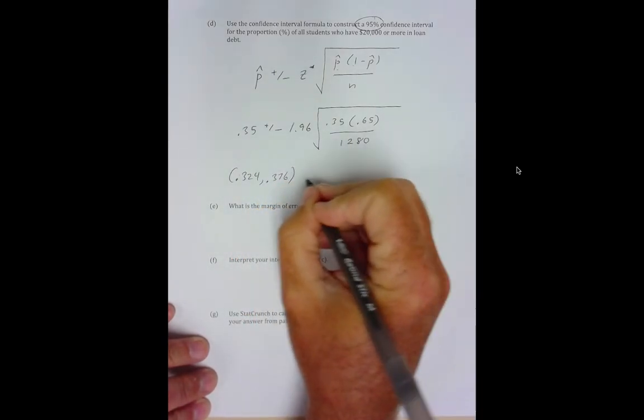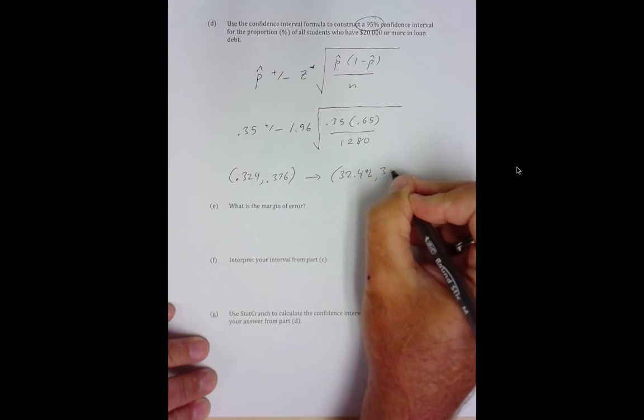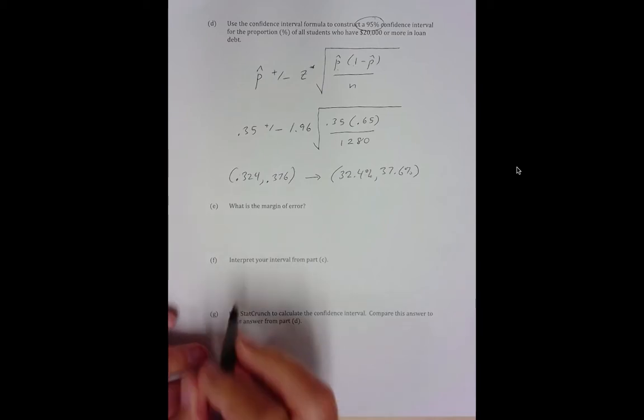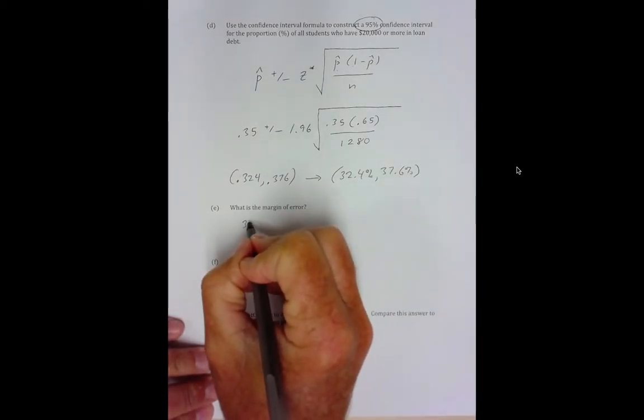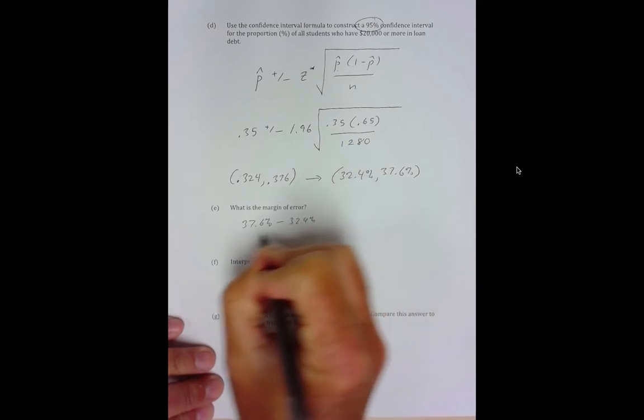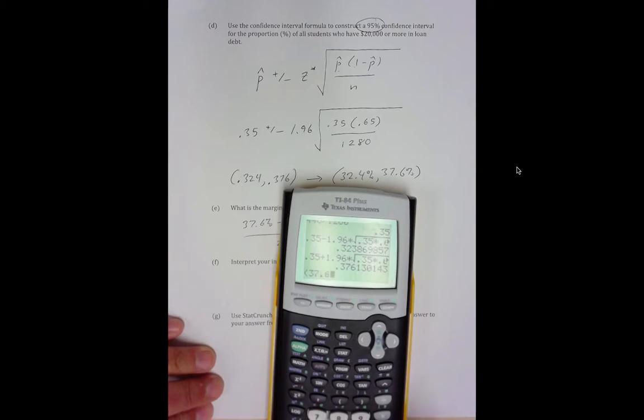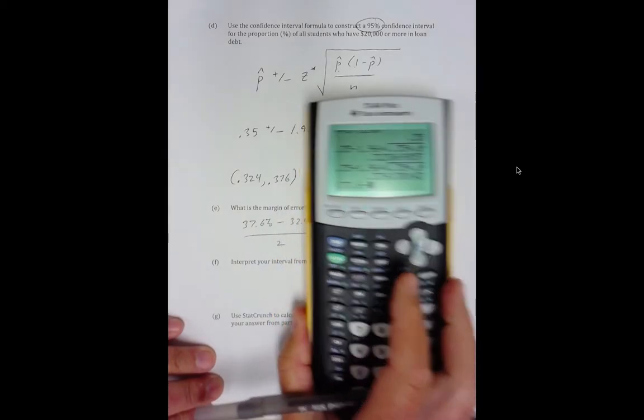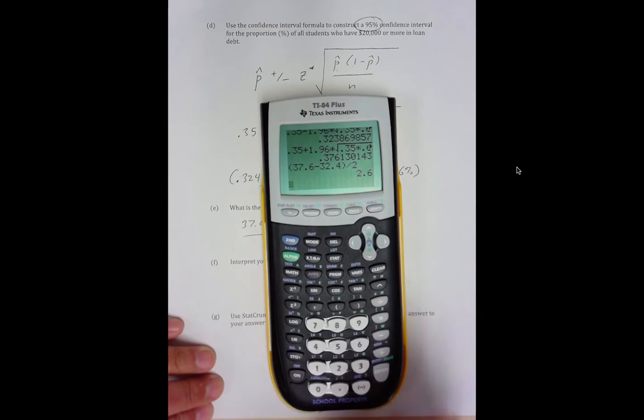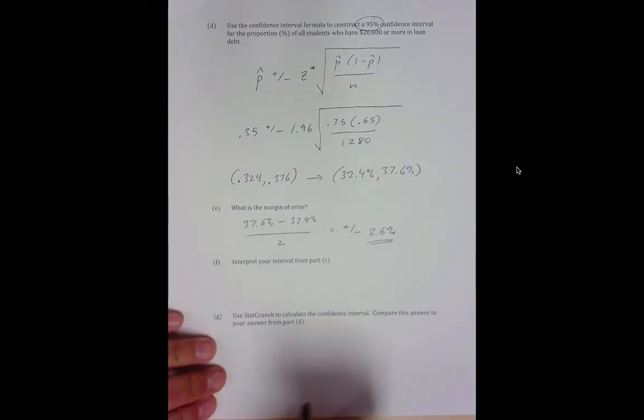Now these things are usually reported in percentages so 32.4% to 37.6%. What's the margin of error? Big number minus small number over 2. So plus or minus 2.6%.